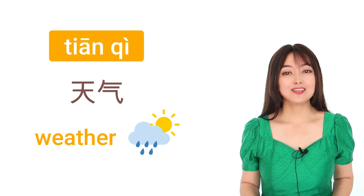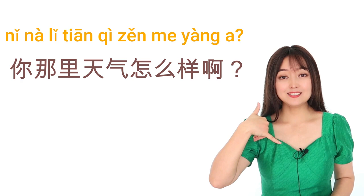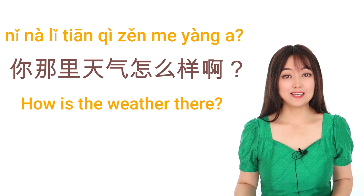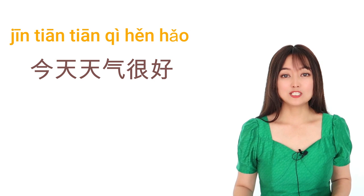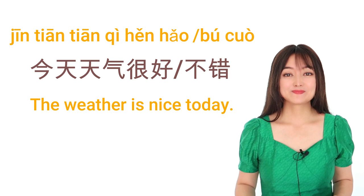Like you are calling your friend who is in another city. You ask: 你那里天气怎么样啊？(How is the weather there?) So he can say: 今天天气很好。或者今天天气不错。The weather is good, nice. 今天天气很好。或者今天天气不错。